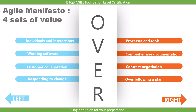The agile manifesto argues that although the concepts on the right have value, those on the left have greater value. The manifesto is not suggesting to replace the items on the right with the left; rather, it stresses upon prioritizing left items over right. The agile manifesto was created as an alternative to document-driven, heavyweight software development processes such as the waterfall approach.